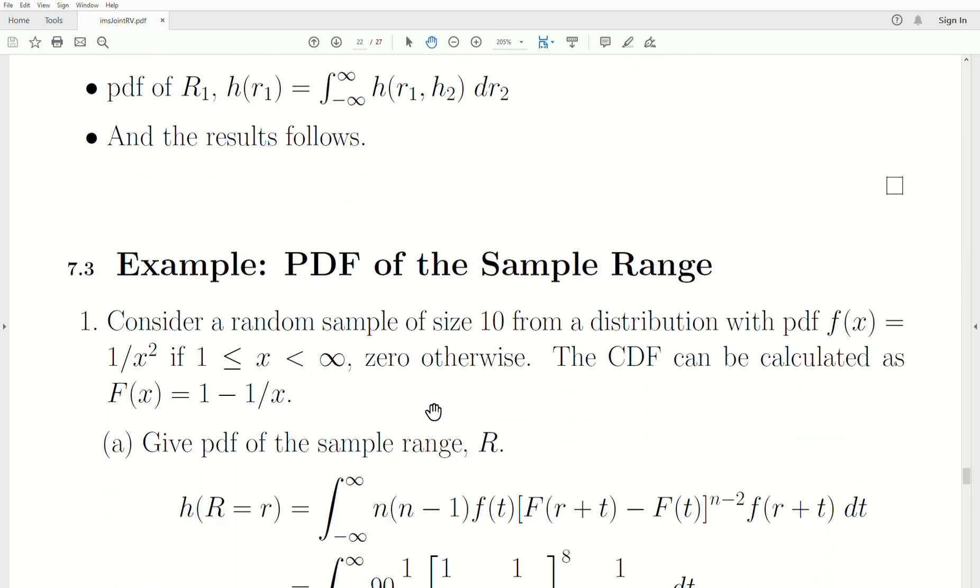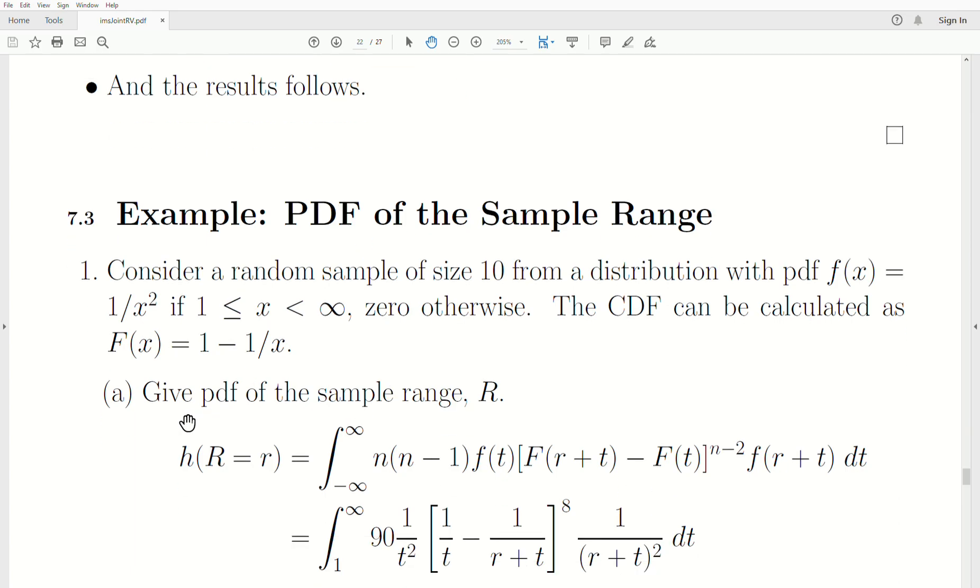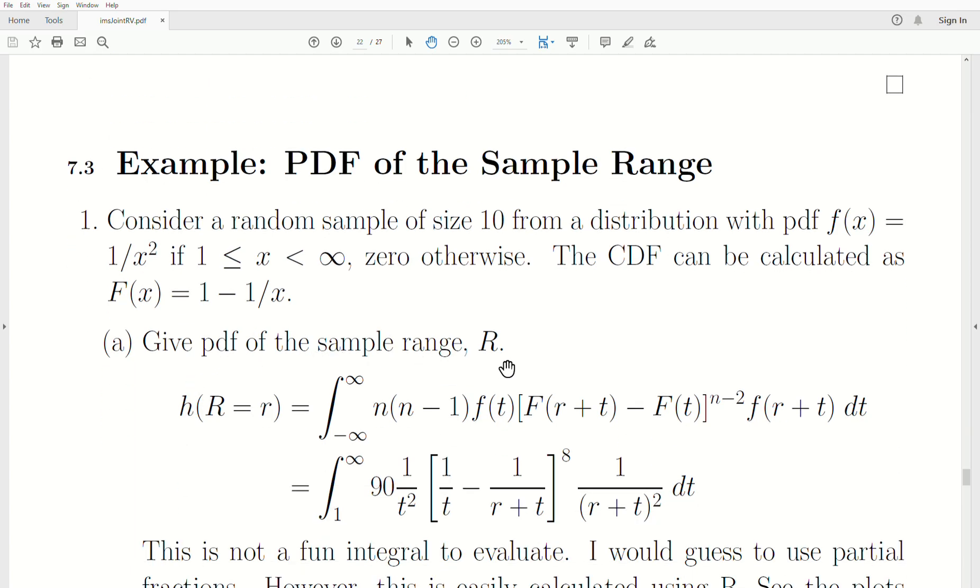Let's go through a quick example. Consider a random sample size 10 from a distribution with PDF f(x), which is 1 over x squared, x goes from 1 to infinity, and 0 otherwise. The CDF can be calculated as capital F. Give the PDF of the sample range R.